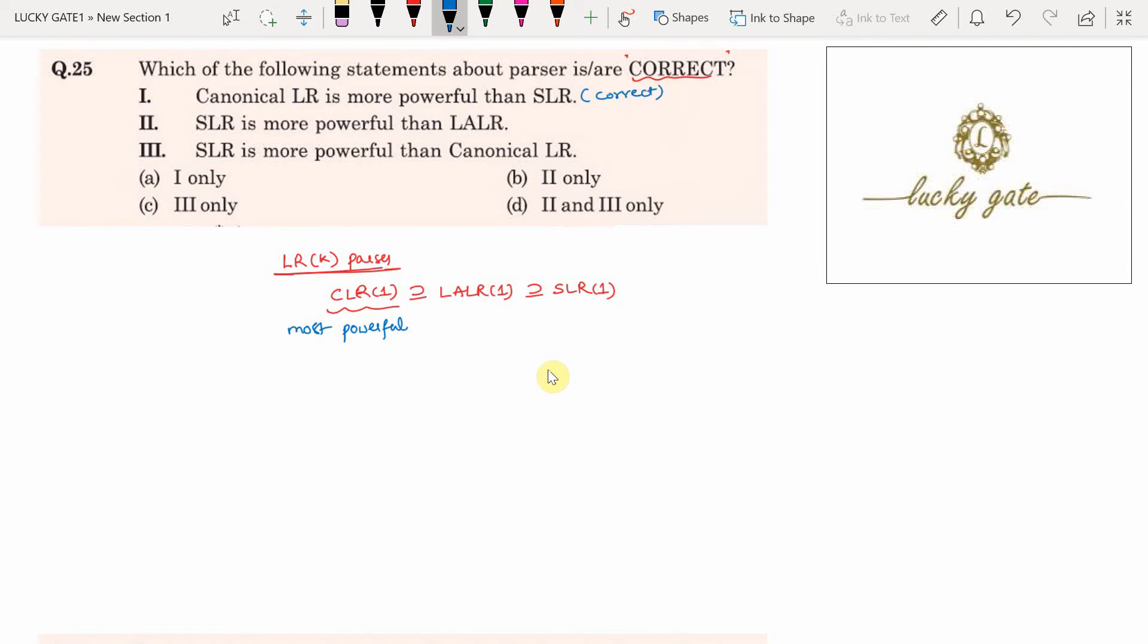Now look at statement 2: SLR is more powerful than LALR. When you look at the power, SLR of 1 is subset or equal to LALR of 1. So when compared, LALR of 1 is more powerful, but the statement says SLR is more powerful, so it is an incorrect statement.